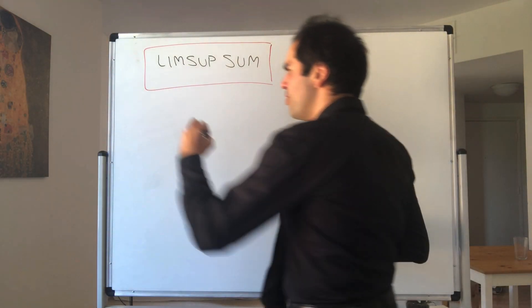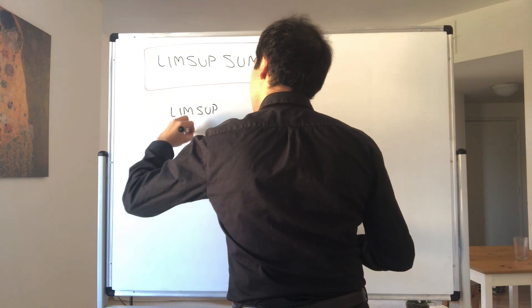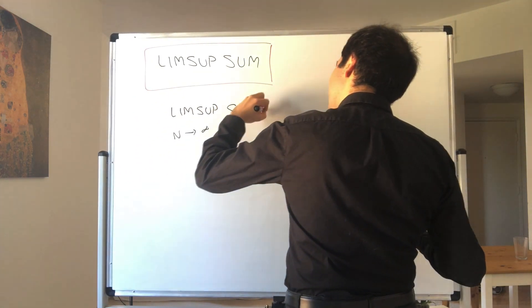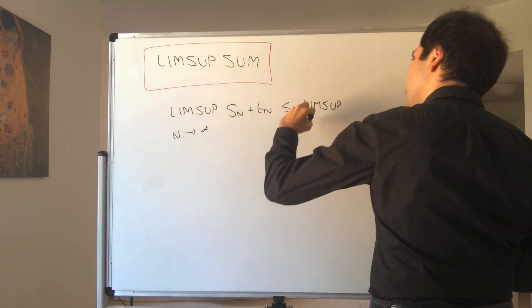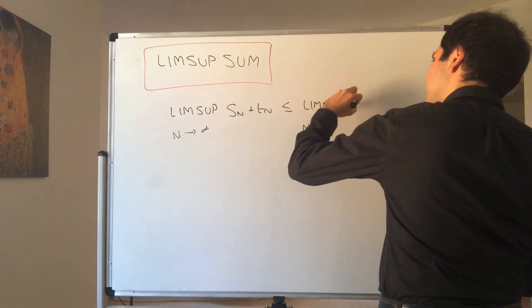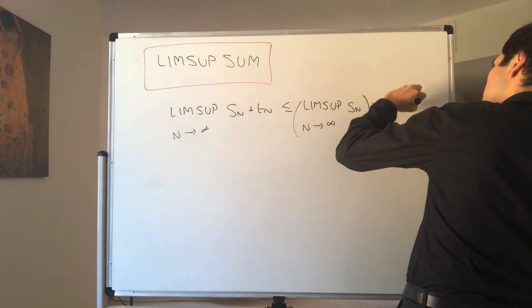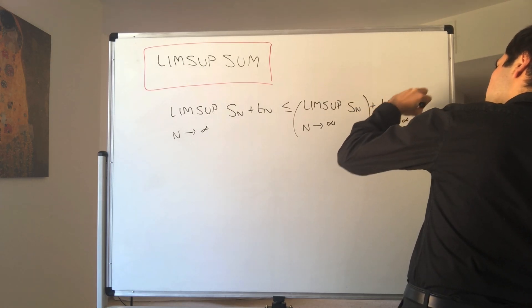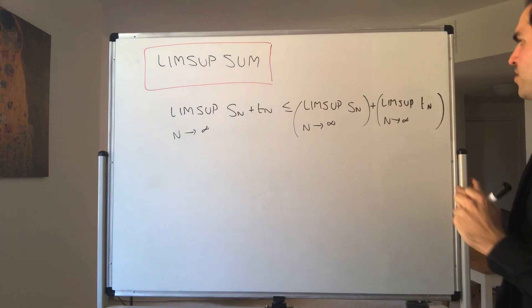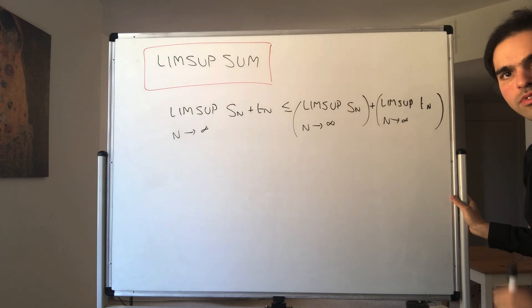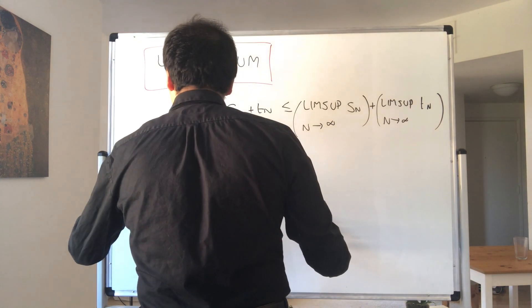Thanks for watching. Today I would like to show that the lim sup of a sum — so the lim sup of Sn plus Tn — is less than or equal to the sum of the lim sups. So it's less than or equal to lim sup of Sn plus lim sup of Tn. This is sometimes called sub-additive. It's a classical exercise in lim sups, so let me remind you what the definition is.